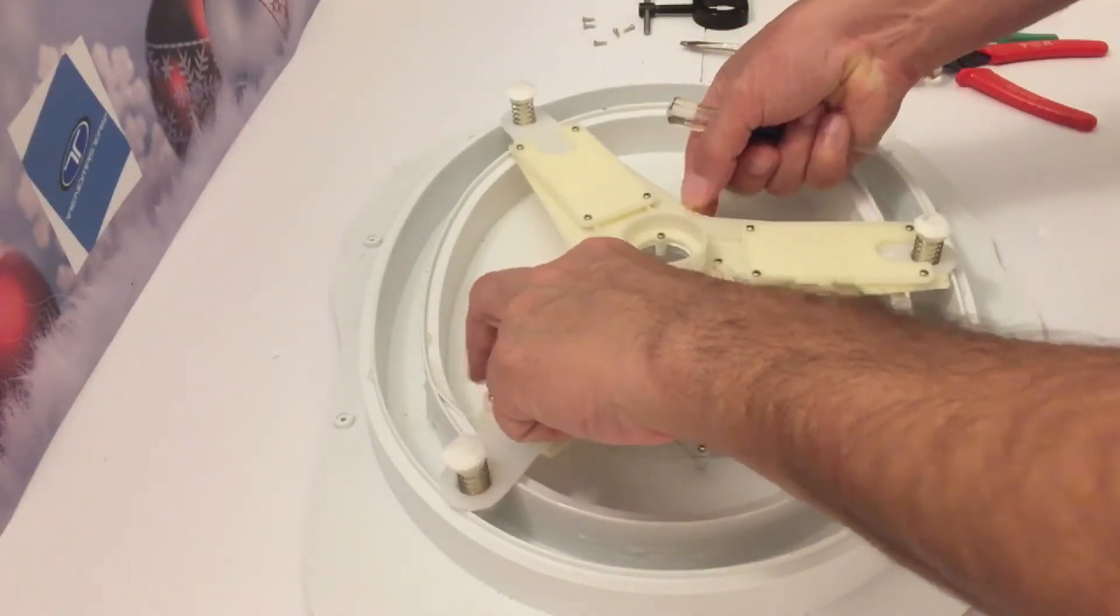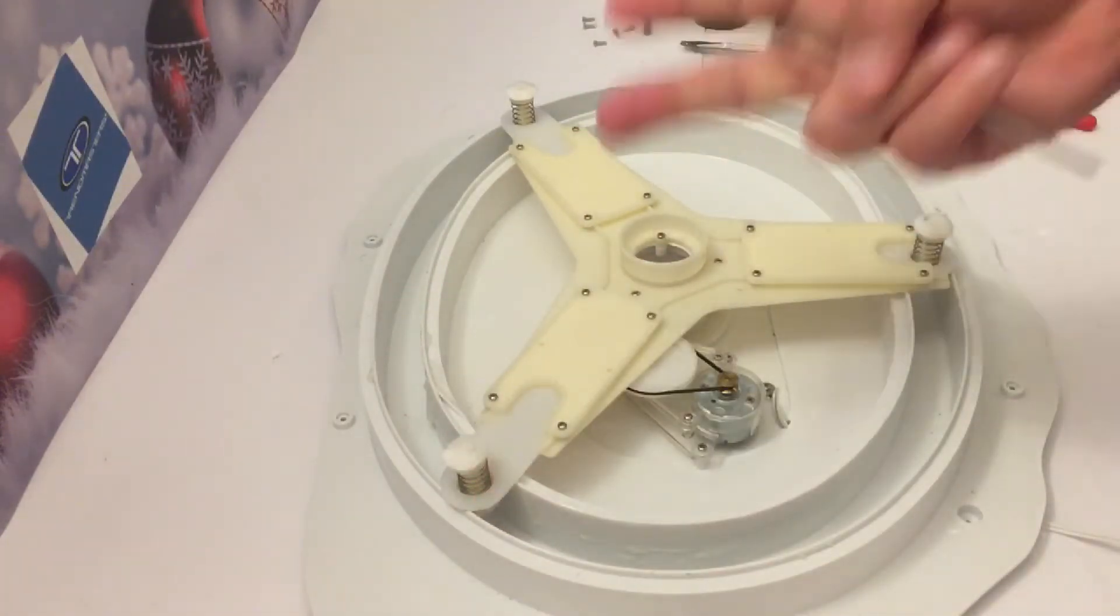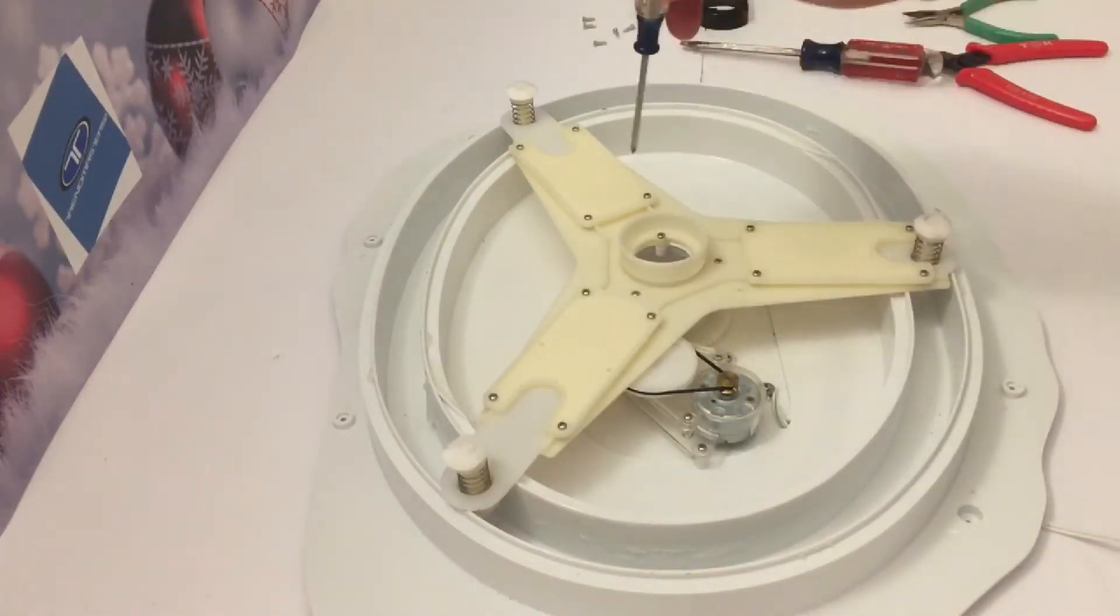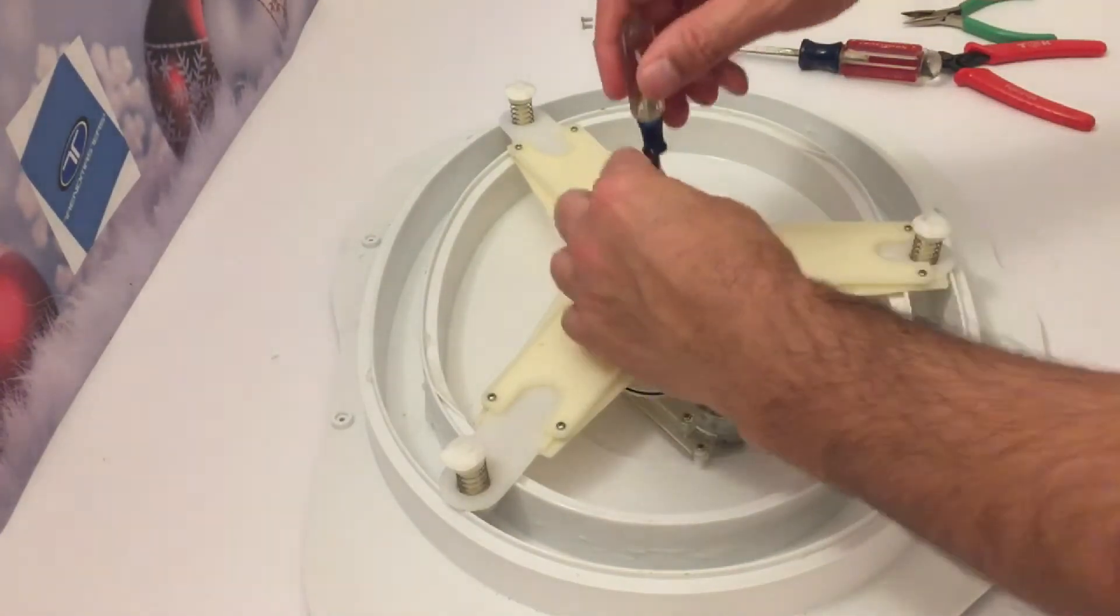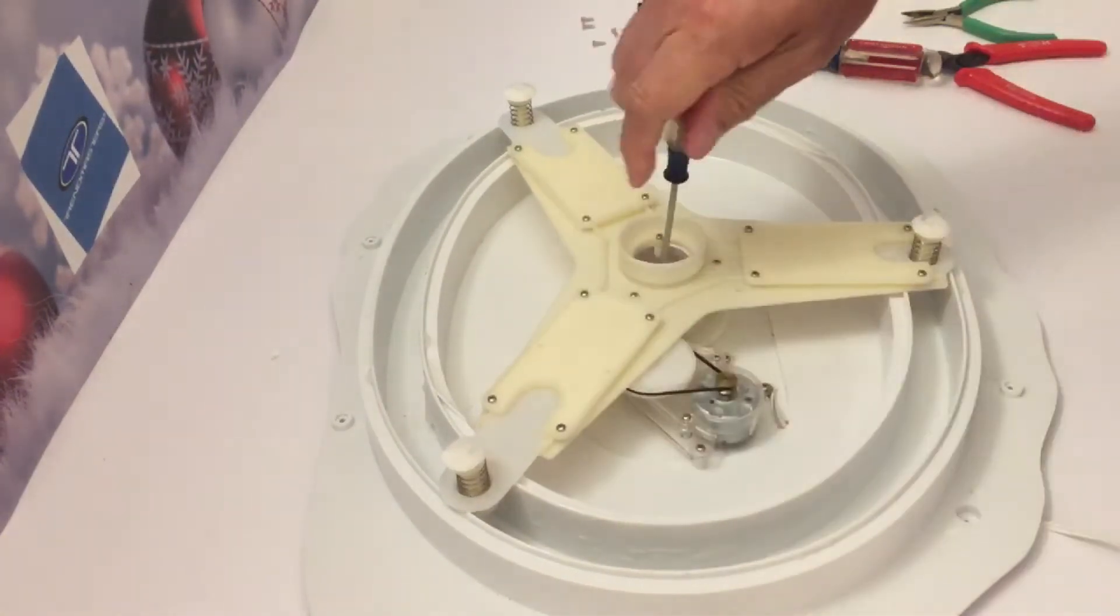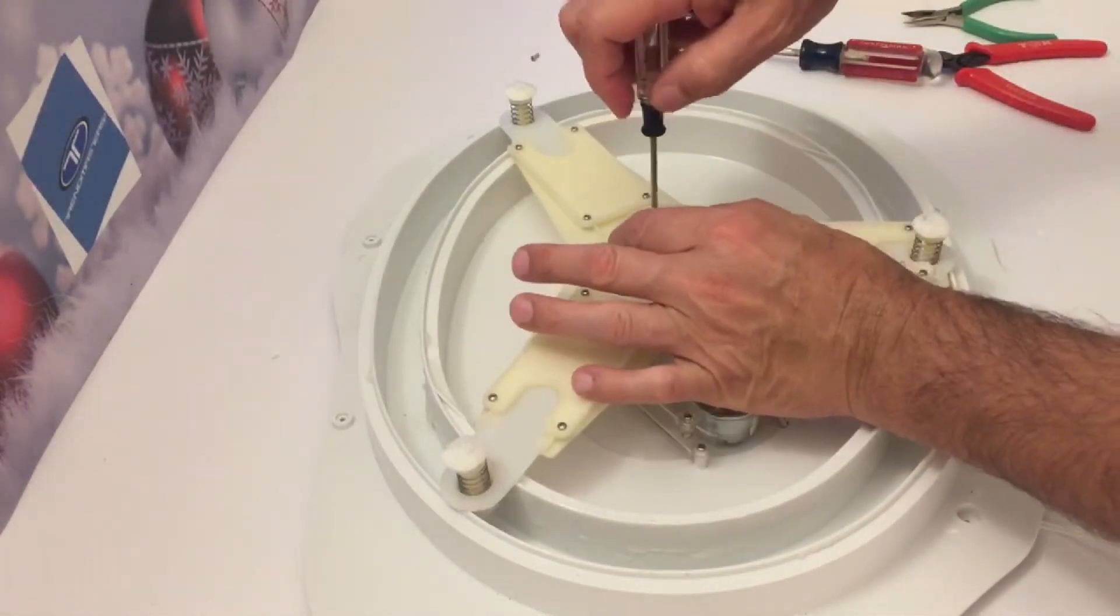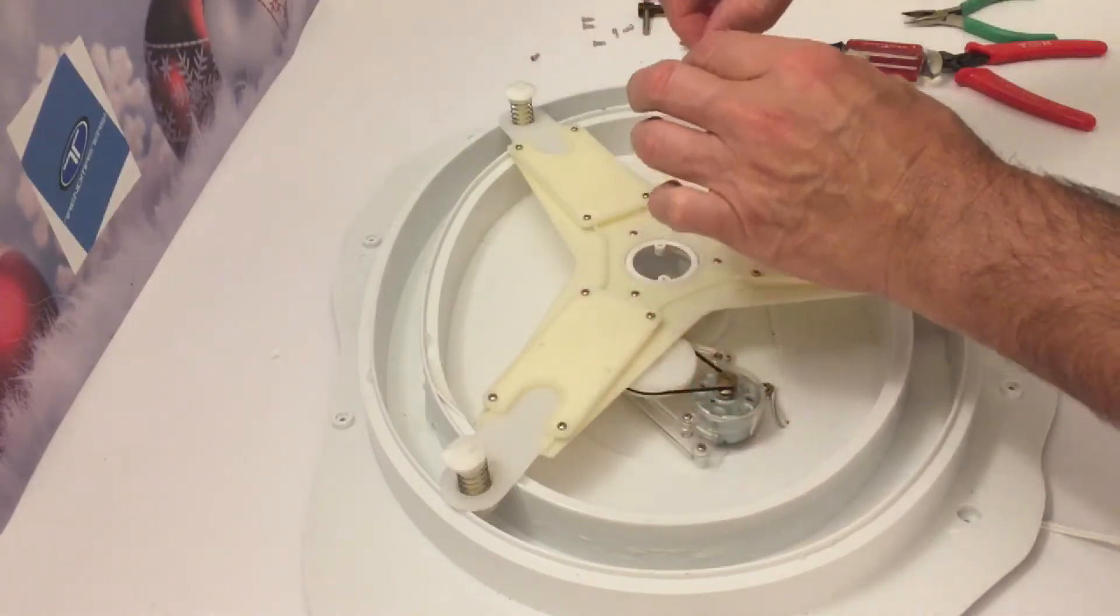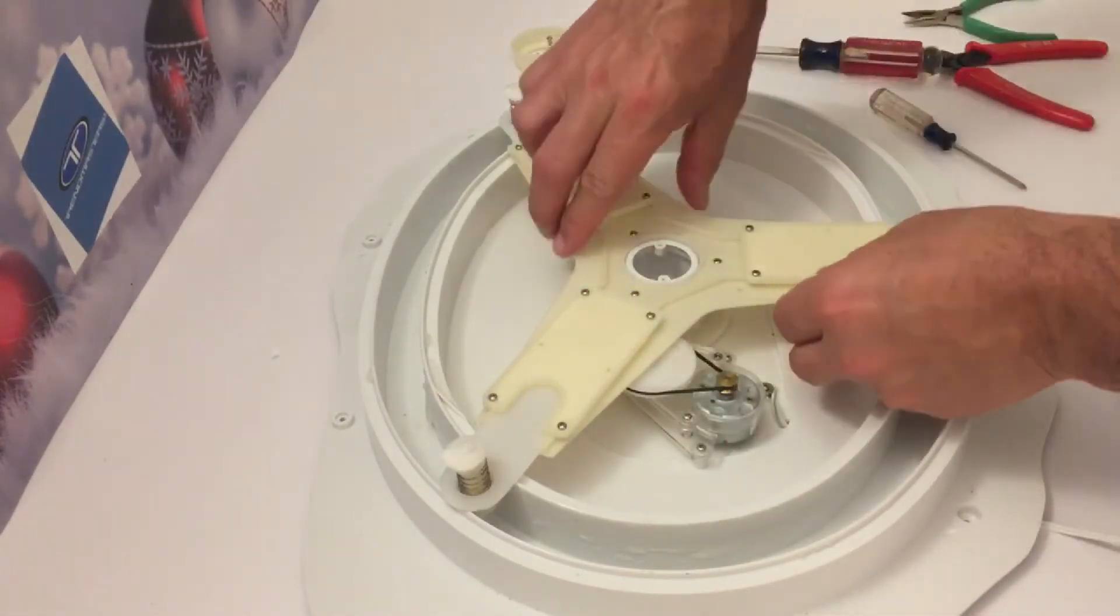The next thing we're going to do is remove the plate. There's two screws. With a small Phillips screwdriver, remove the two screws on the holding plate at the top. This should come off fairly easy. Now, you can put the plate aside.